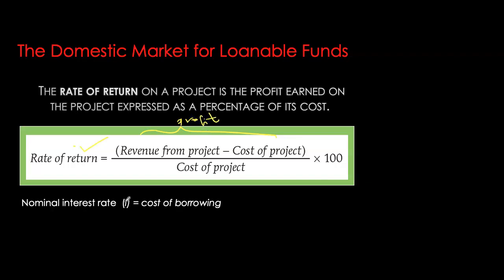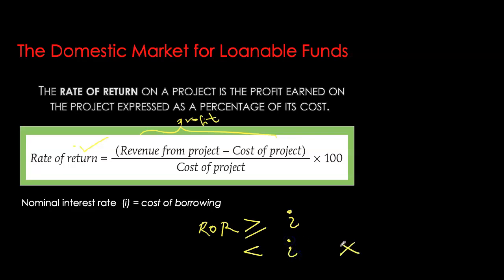Whatever the prevailing interest rate, I compare my expected rate of return to this cost of borrowing. I will only borrow funds if the rate of return on the project is higher than or equal to my nominal interest rate. If the rate of return is lower than my cost of borrowing, I will not borrow money and not pursue the investment opportunity, because my rate of return is not even covering the financing costs. I will only pursue projects where the rate of return covers my borrowing cost.